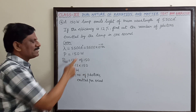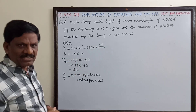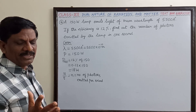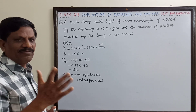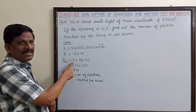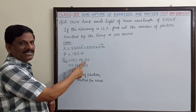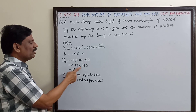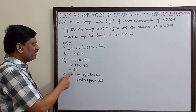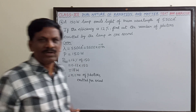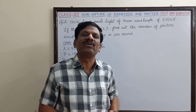The actual power of the lamp is 150 watt, but the effective power utilized for the photoelectric effect is only 12% of 150 watt. That is 0.12 into 150, which equals 18 watt. Only 18 watt of power is utilized for the photoelectric emission.